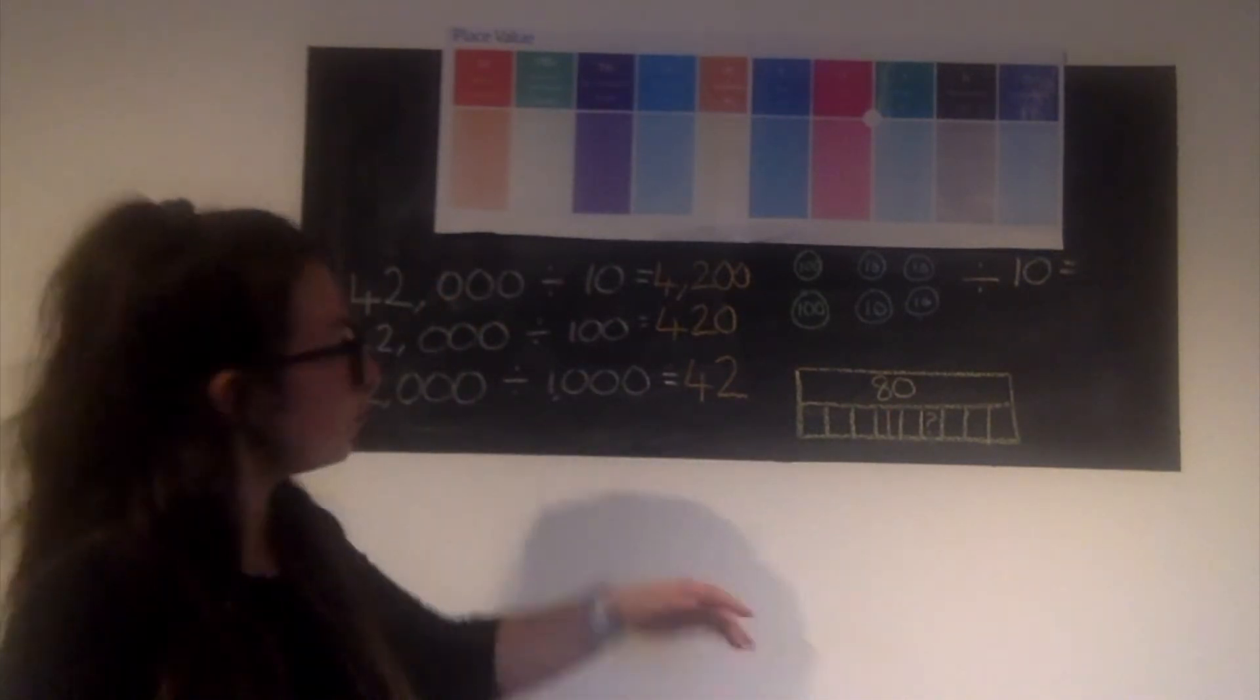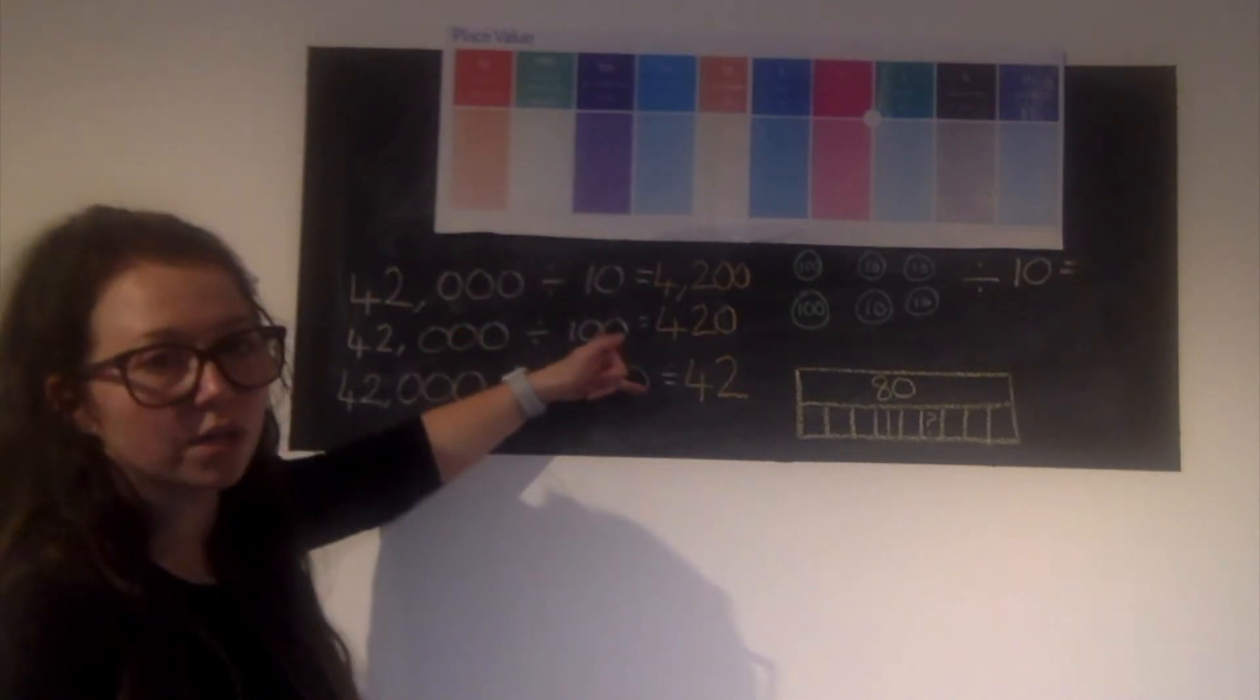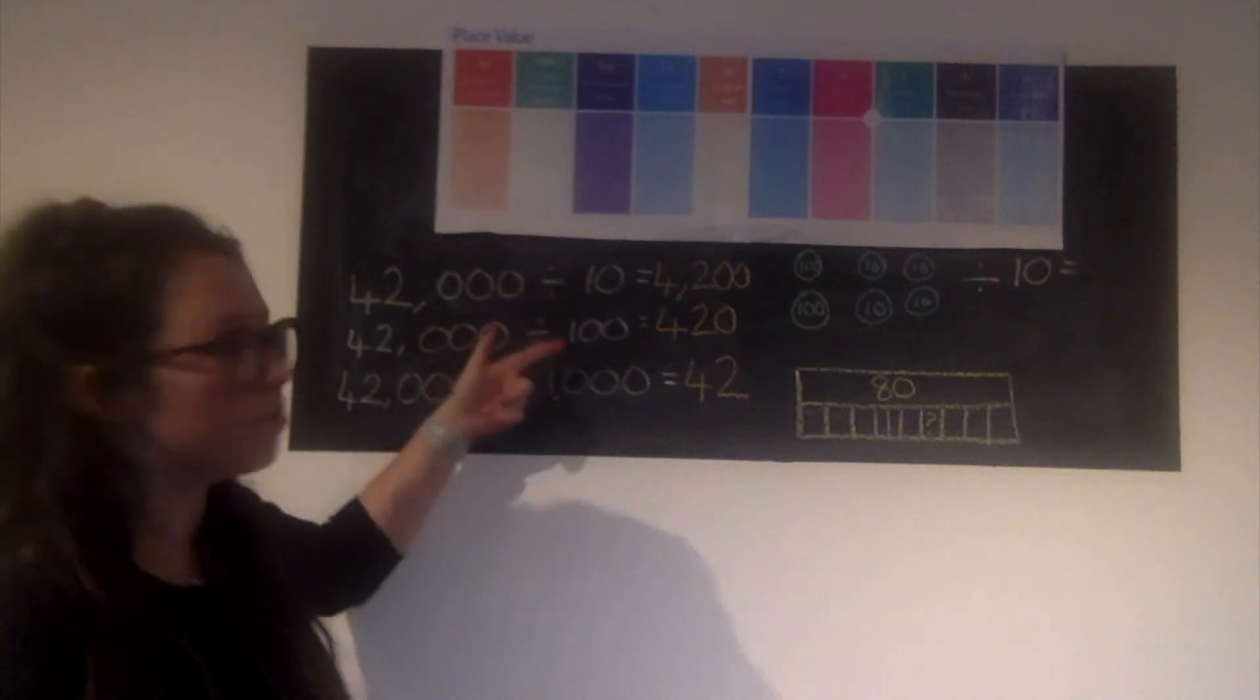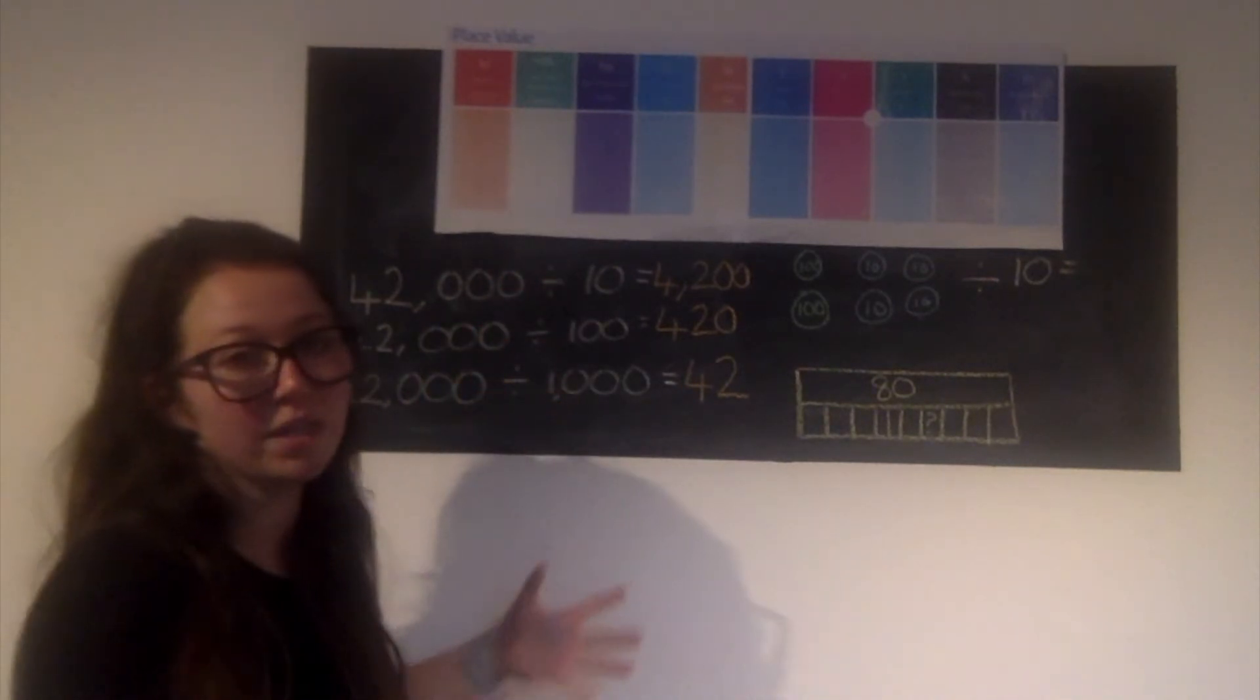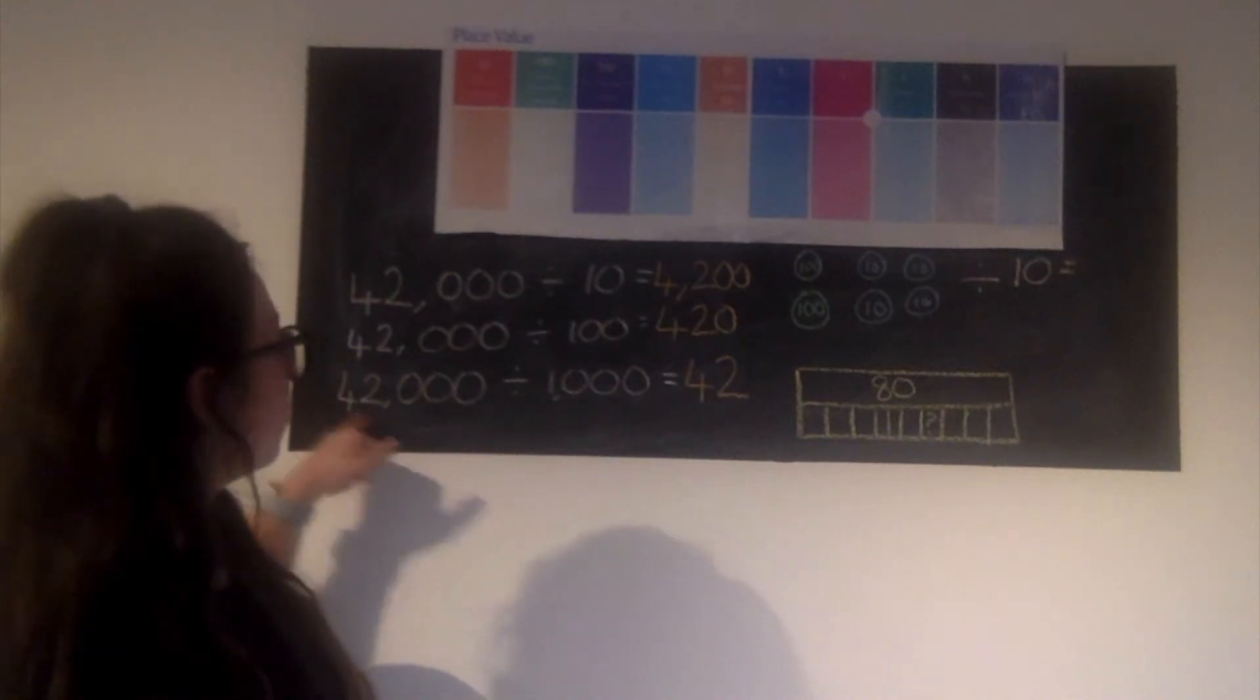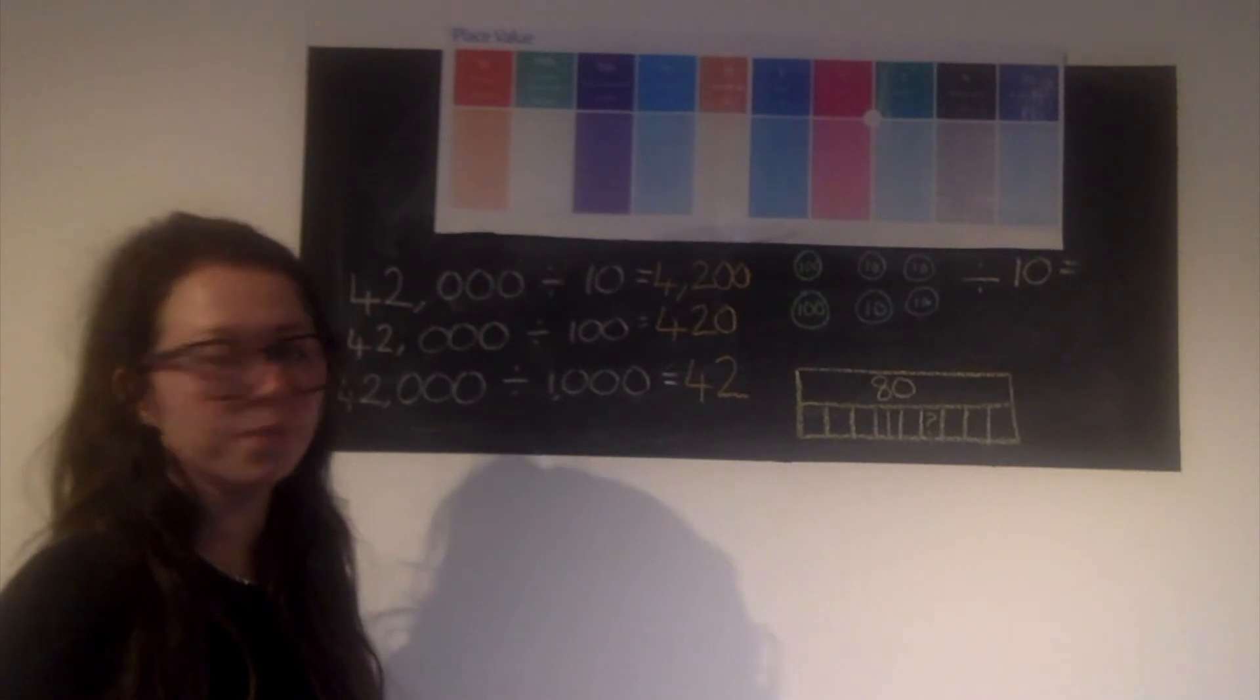Hopefully you've noticed that each time this number is getting 10 times smaller each time. So 10, 100, 1000 dividing by. Remember, the more that we divide by, the smaller our amount is going to be. So I've got 42,000s divided by 1,000 people, each person gets 42.